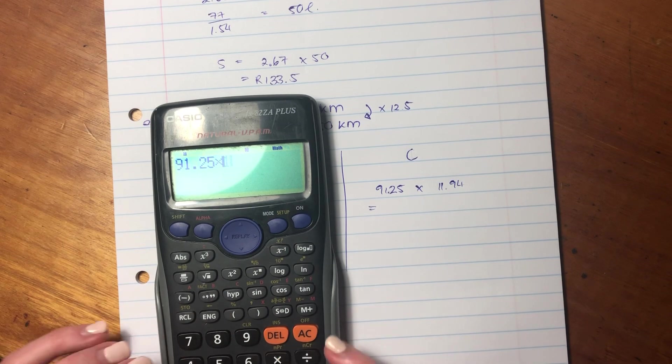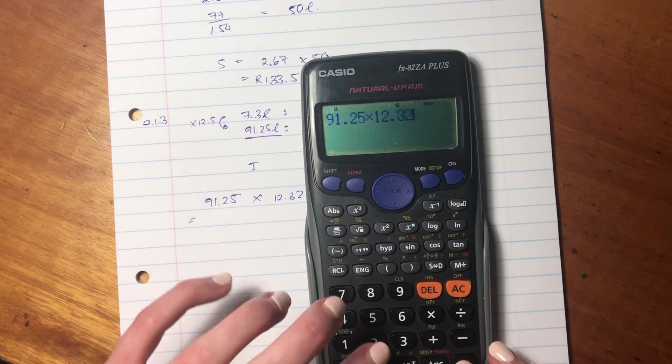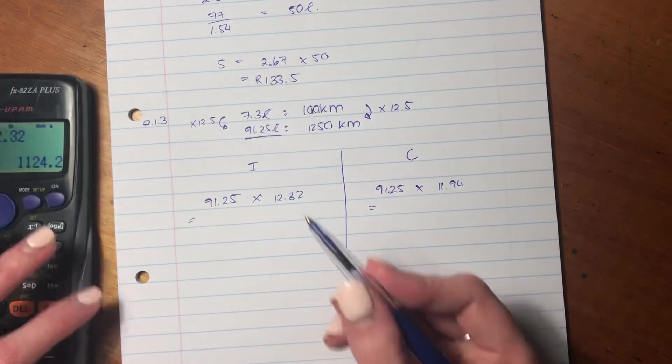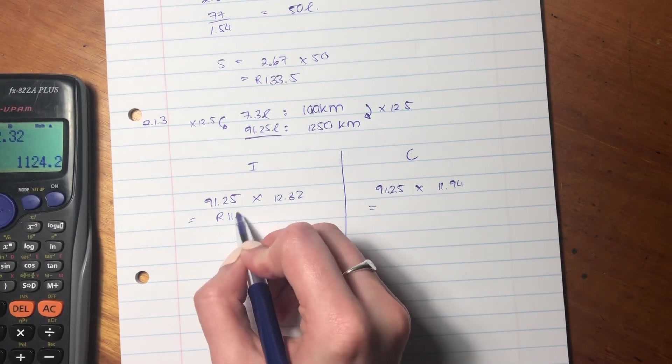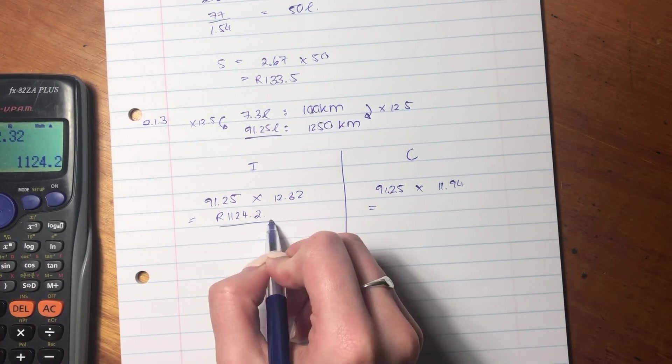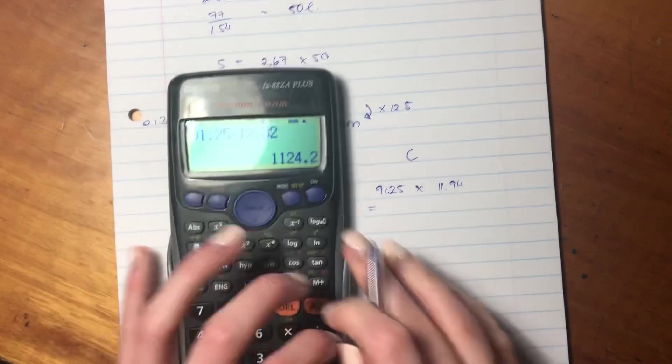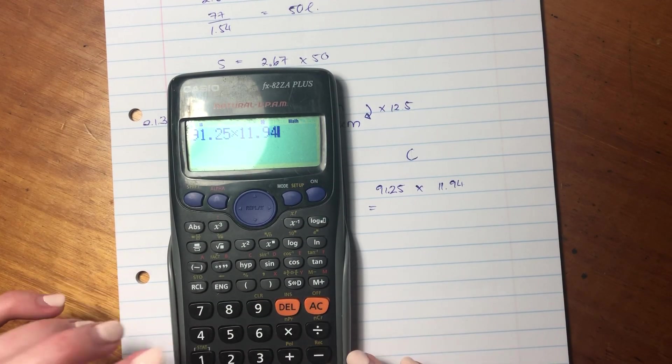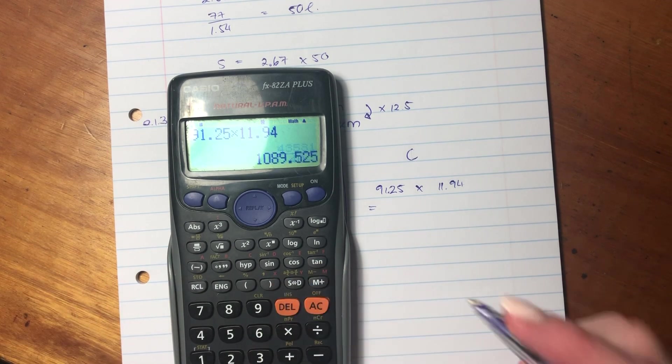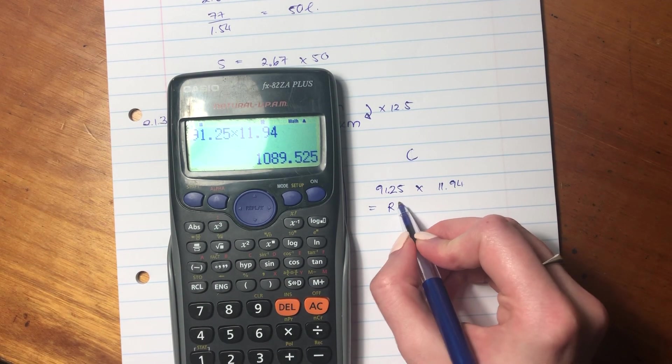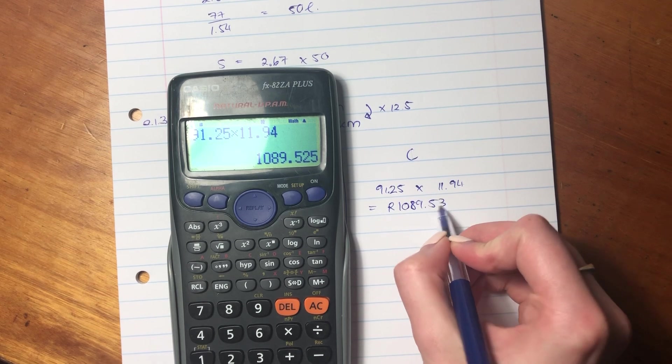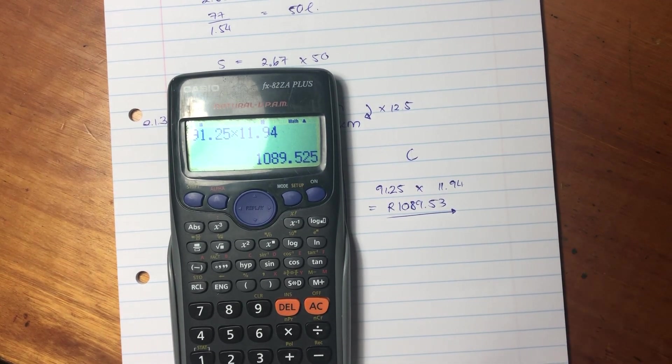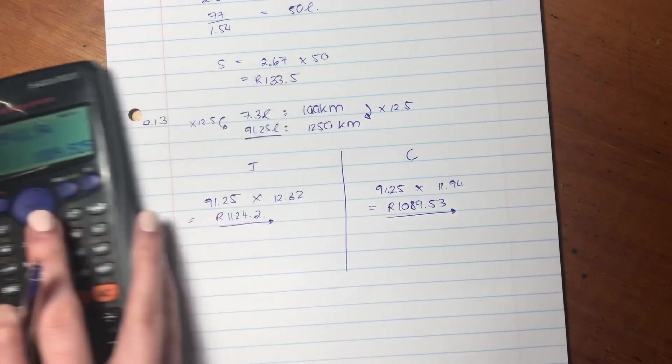12.32, so the answer there is 1124.2. Let's see what it is at the coastal region. The most important thing here is always to make sure that you type in the correct numbers, and round it off to two decimal places, because it's a currency, and remember your round value.